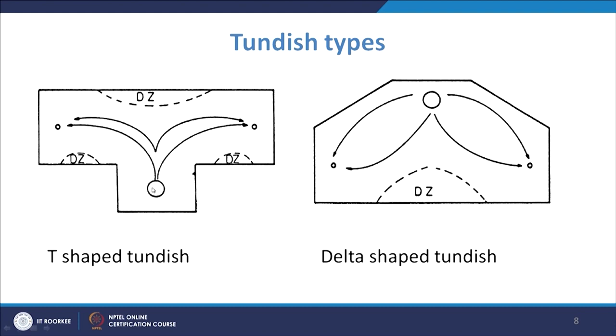In the delta-shape tundish, because of the inertia of the fluid, it will move towards the outlet due to streamlining effects. The dead zones which were likely to be formed in corners are not formed here. In the delta shape tundish, dead zones are avoided in those regions, though there is still a likelihood of formation of dead zones elsewhere. On these tundishes you can certainly use flow modifiers to have an effect on dead zone formation — the dead zones can be reduced using different kinds of flow modifiers.